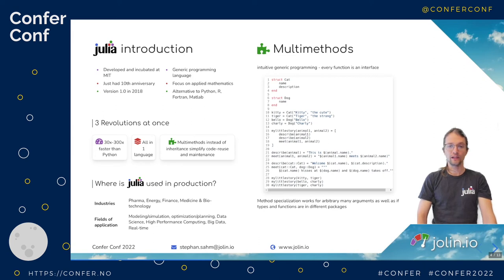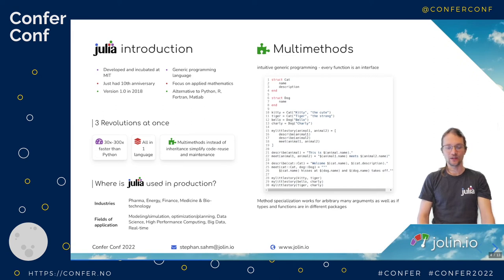Then we run our little story for our pairs — you're invited to try it out at home. Just download Julia and type in these examples and you'll see it does what it should. Kitty and Tiger are described as cats and meet with the standard default case. Bello and Charlie are described and meet with the default function. Letting Tiger and Charlie meet gives a special cat description and a generic dog description, and our special meet function is called.